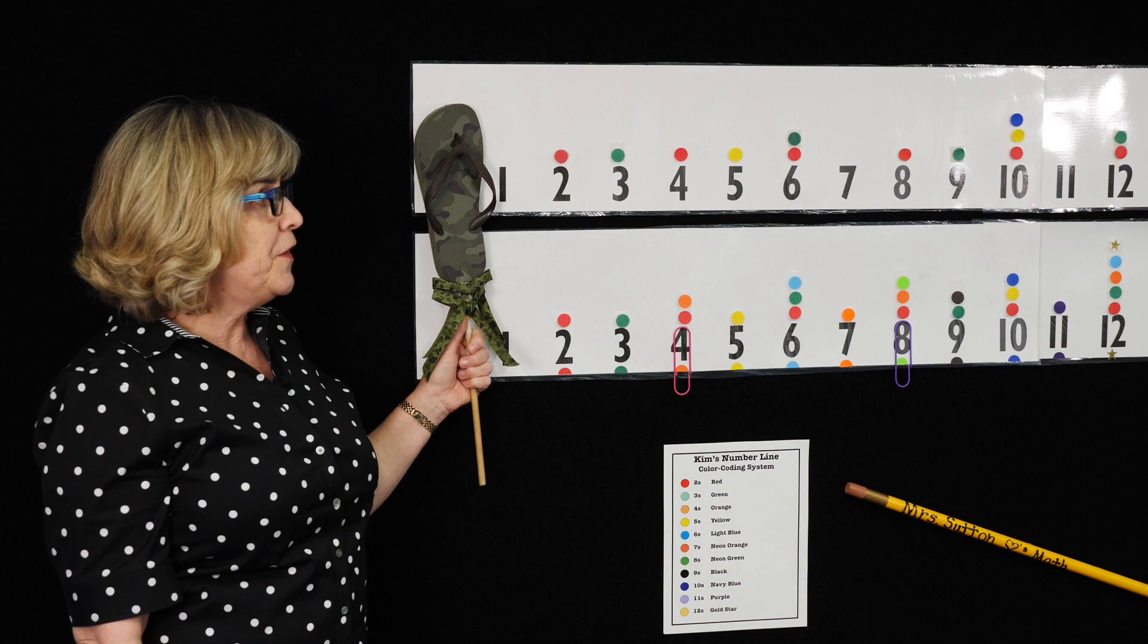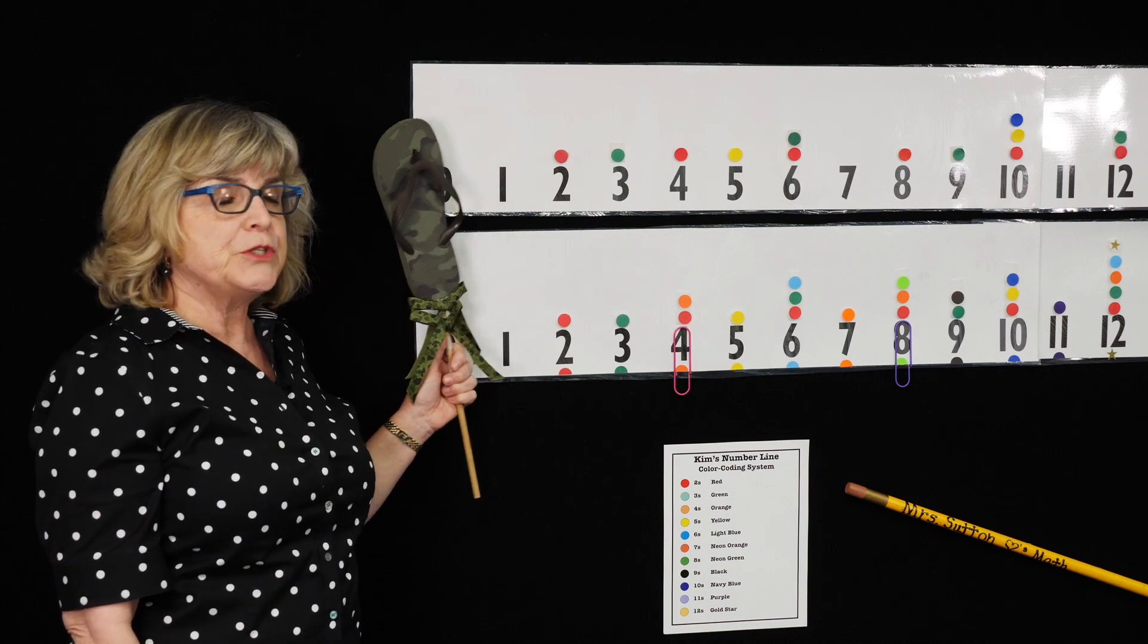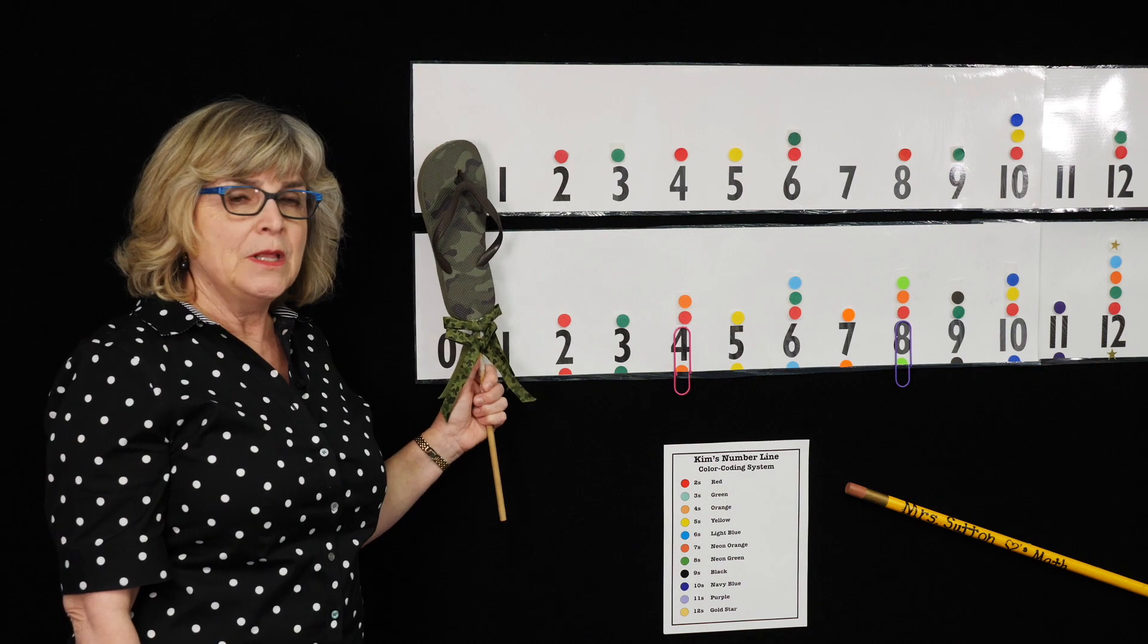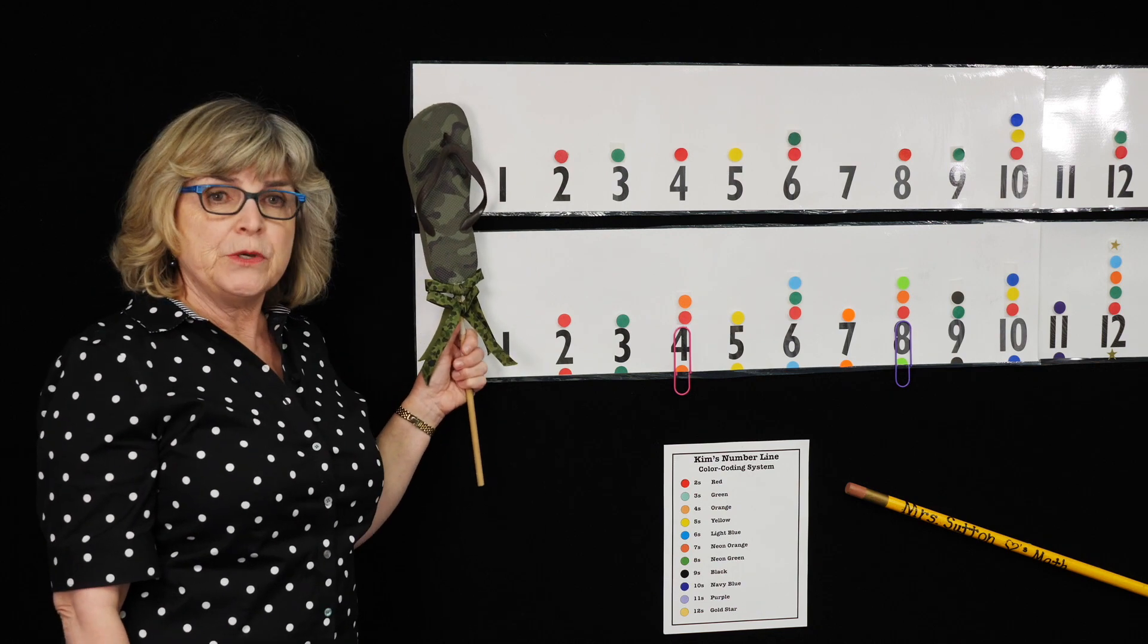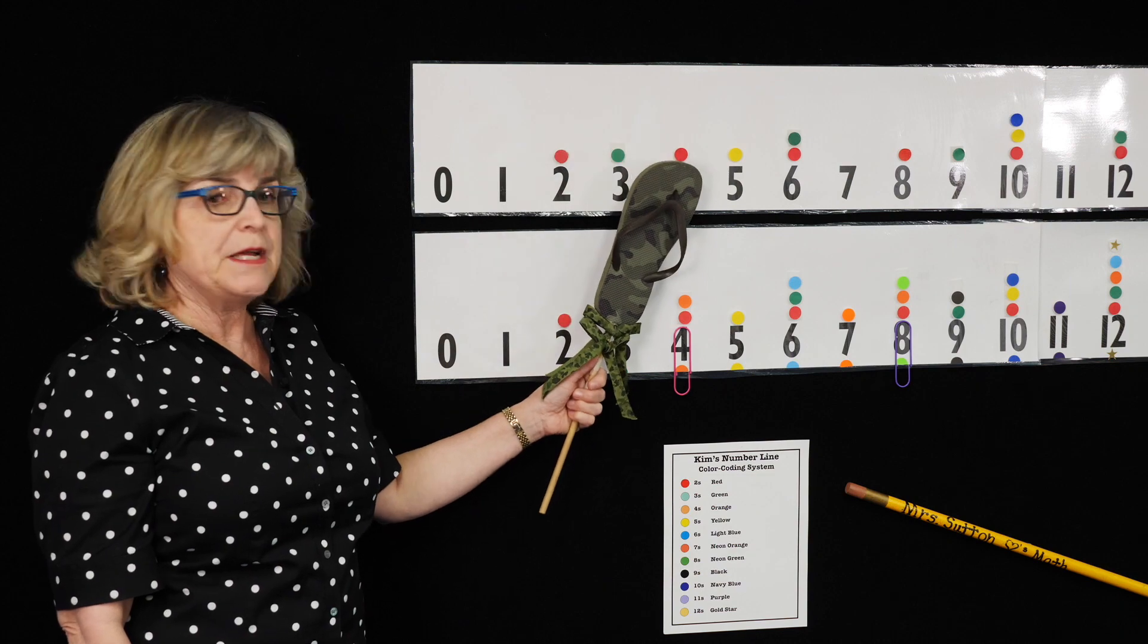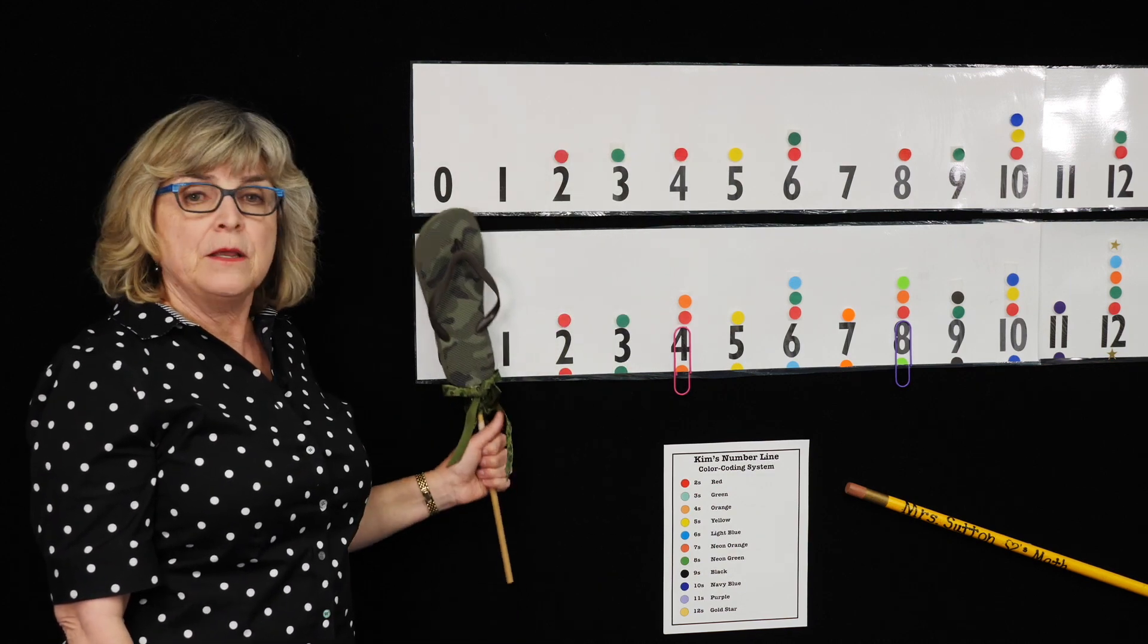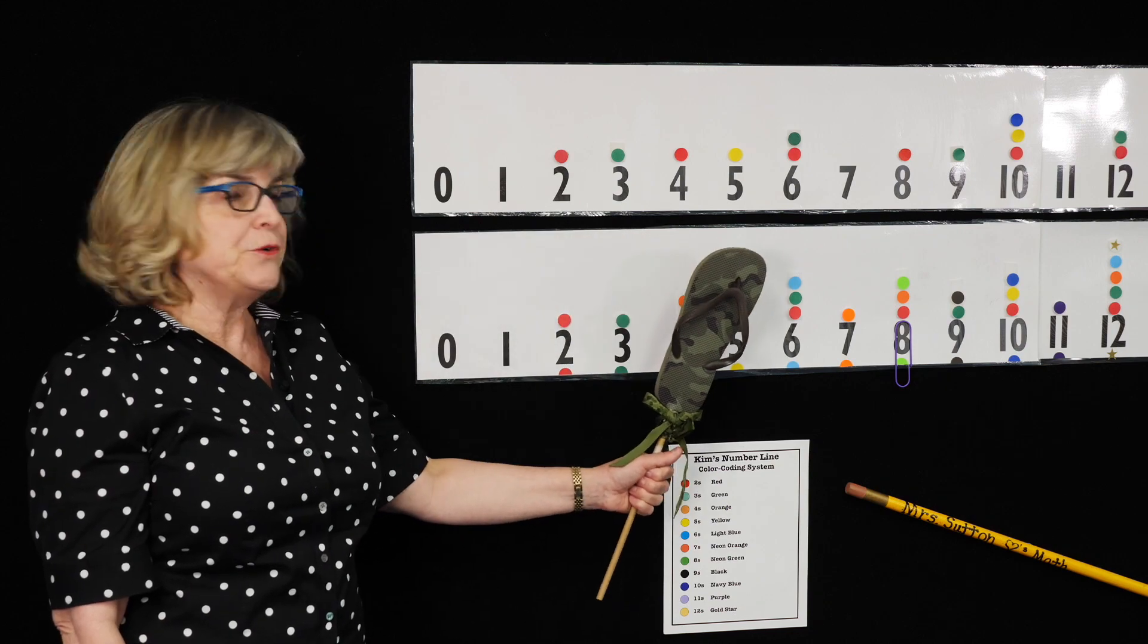Kindergarten teachers can build the number line from point of origin to 100 as they count to the 100th day of school. Grades 1 and 2 can build the number line from point of origin to 120, and 3rd and above can build the number line from point of origin to 144.